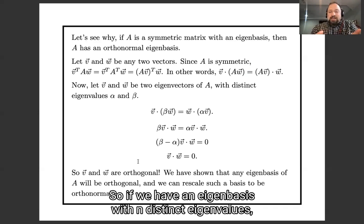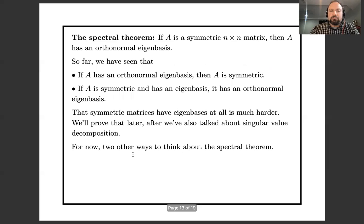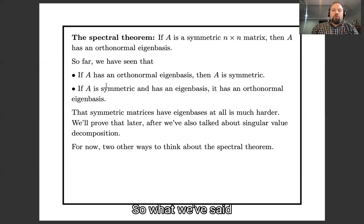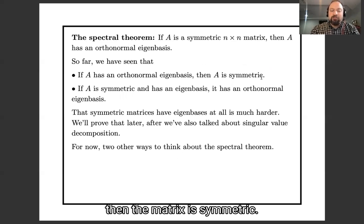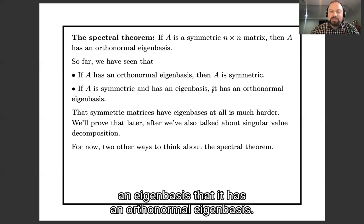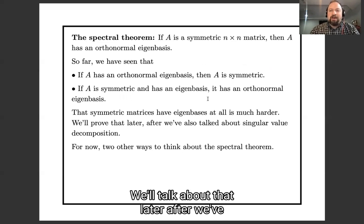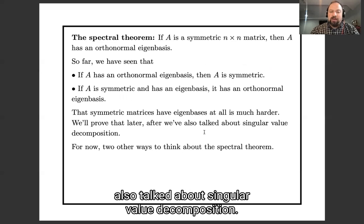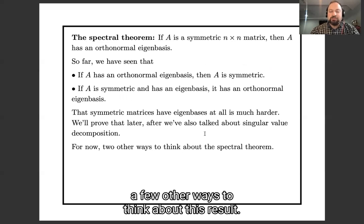So if we have an eigenbasis with n distinct eigenvalues, then they're all going to be orthogonal and we can rescale them to be orthonormal. What we've said so far: if we have an orthonormal eigenbasis, the matrix is symmetric; if the matrix is symmetric and has an eigenbasis, then it has an orthonormal eigenbasis. The fact that there is an eigenbasis at all — that's harder. We'll talk about that later, after we've also talked about singular value decomposition.